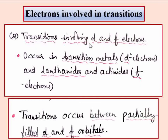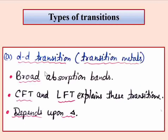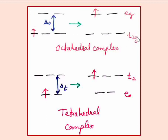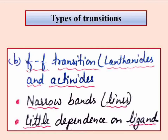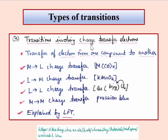The second class involves D and F electrons. D-D transitions occur in transition metal complexes, from one D-orbital to another D-orbital. F-F transitions occur in lanthanides and actinides, with electrons transferring between F-orbitals. The third type of transition is charge transfer: MLCT (metal to ligand charge transfer), LMCT (ligand to metal charge transfer), LLCT (ligand to ligand charge transfer), and MMCT (metal to metal charge transfer). This covers all types of electronic transitions.